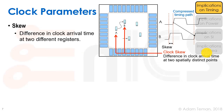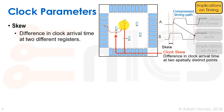We discussed one key parameter: skew, defined as the difference in clock arrival time at two different registers. With register A and register B both clocked from the same source, there will be some margin between them. If the clock arrives at flip-flop B earlier than at flip-flop A, that's what we call negative skew — any type of difference in arrival time is the skew.